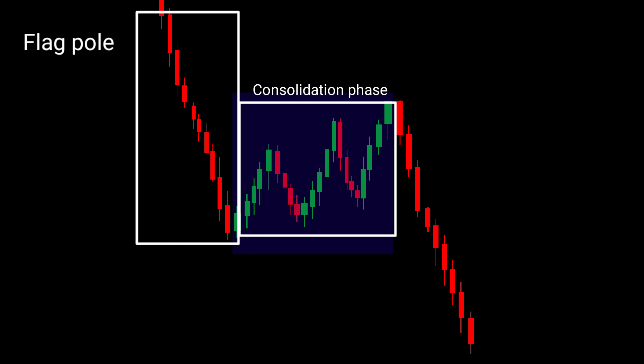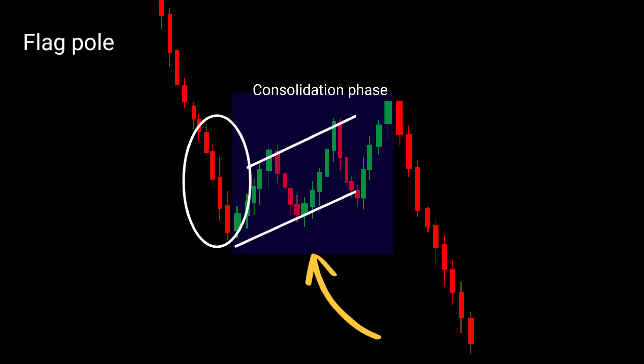Let's uncover the secrets of this pattern. Pay close attention to the flagpole's slope, which should be a strong, steep downward move. A decisive and swift decline indicates the potential for further downside momentum. Observe the flag pattern's consolidation, which typically forms parallel trend lines, indicating a brief pause in the downtrend.